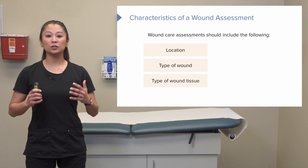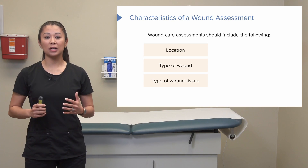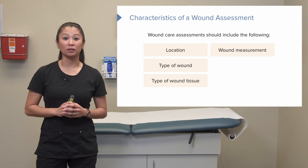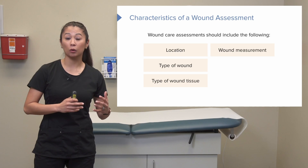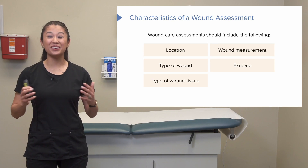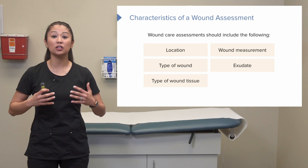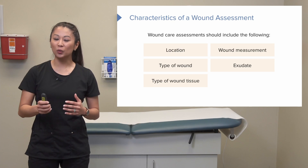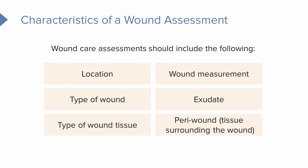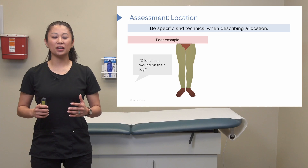Next we need to think about the type of wound tissue when we're talking about wound assessment. Measuring the wound is also really important — that's how we track progress, whether the wound is getting bigger or worse, or if it's getting better. This next term is called exudate — what we're talking about is assessing the drainage of the wound, which tells some really key things in the healing process. And then there's the peri-wound — the tissue around the wound — which is important to assess to help maintain the integrity of the surrounding skin.